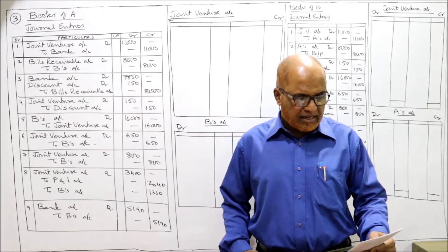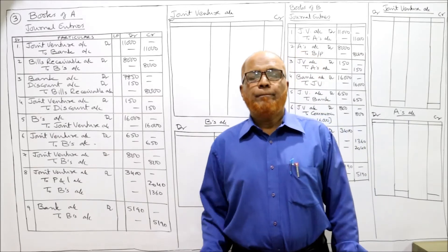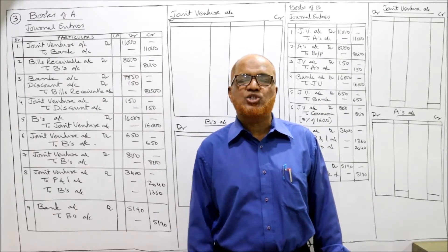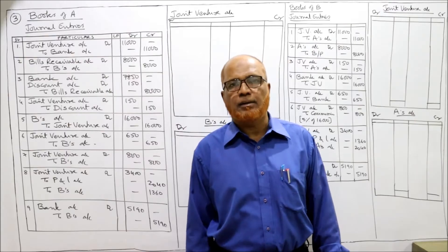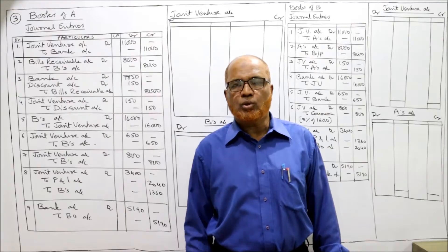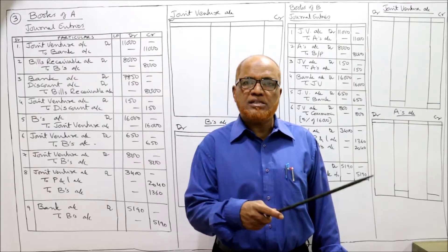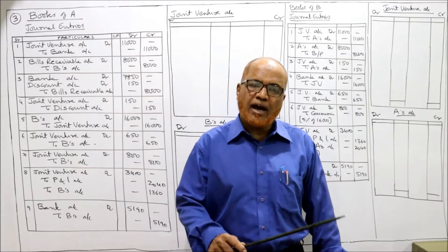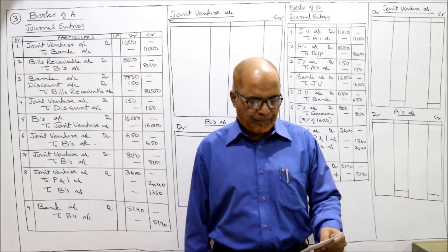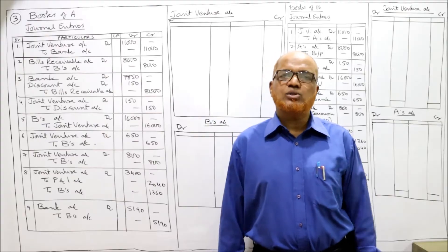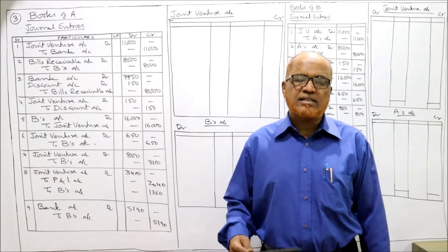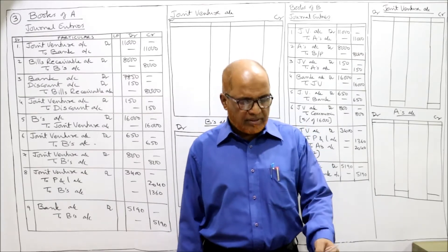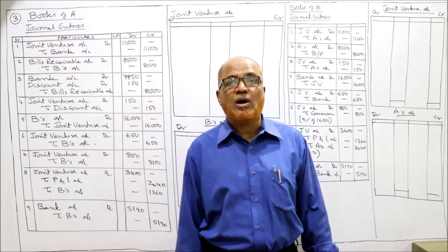B received the consignment and immediately accepted A's draft - that bill for rupees 8,000. So A is the drawer, B is the drawee. A has drawn a bill of 8,000 rupees on B, B has accepted and returned the bill to A. Now A got it discounted for 7,850. The bill which A received the acceptance of from B was discounted with his bank for rupees 7,850, meaning 150 rupees are the discounting charges.